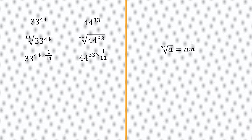By doing that we can now simplify the exponents. 44 divided by 11 is 4, so I have 33 to the power 4. And 33 divided by 11 is 3, so I have 44 to the power 3. Now let's determine which is larger: 33 to the power 4 or 44 to the power 3.